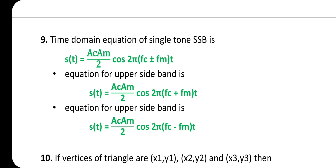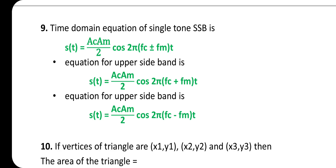Time domain equation of single-tone SSB is: s(t) = (A_c × A_m / 2) × cos(2π(f_c ± f_m)t), where plus or minus applies. The equation for upper sideband: s(t) = (A_c × A_m / 2) × cos(2π(f_c + f_m)t).